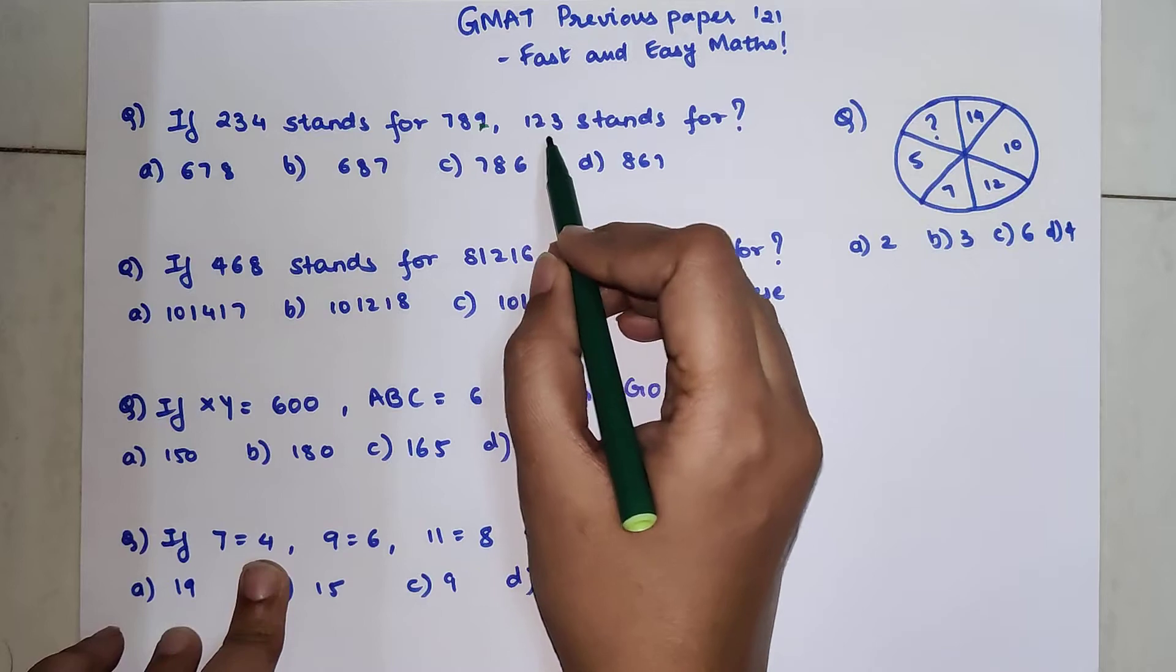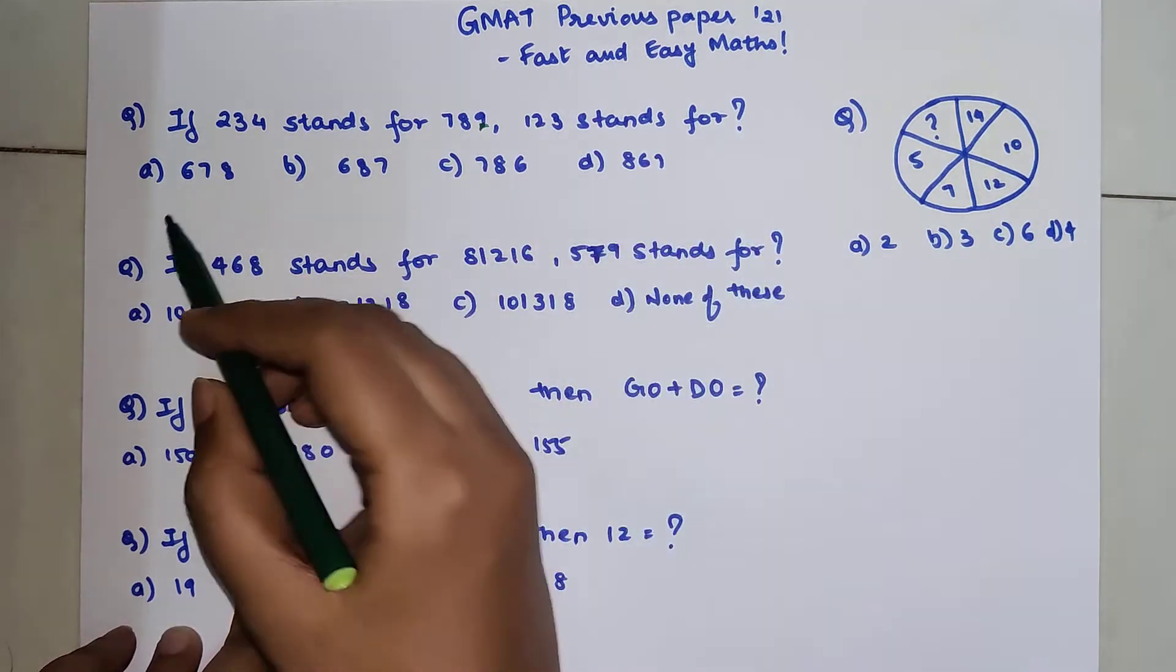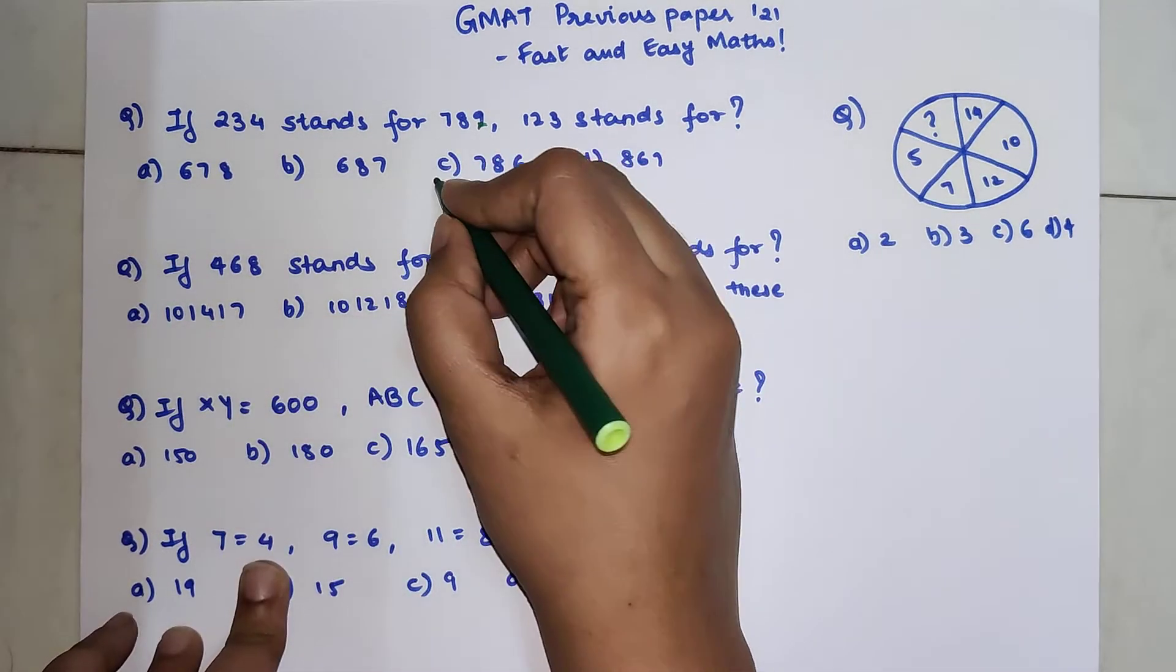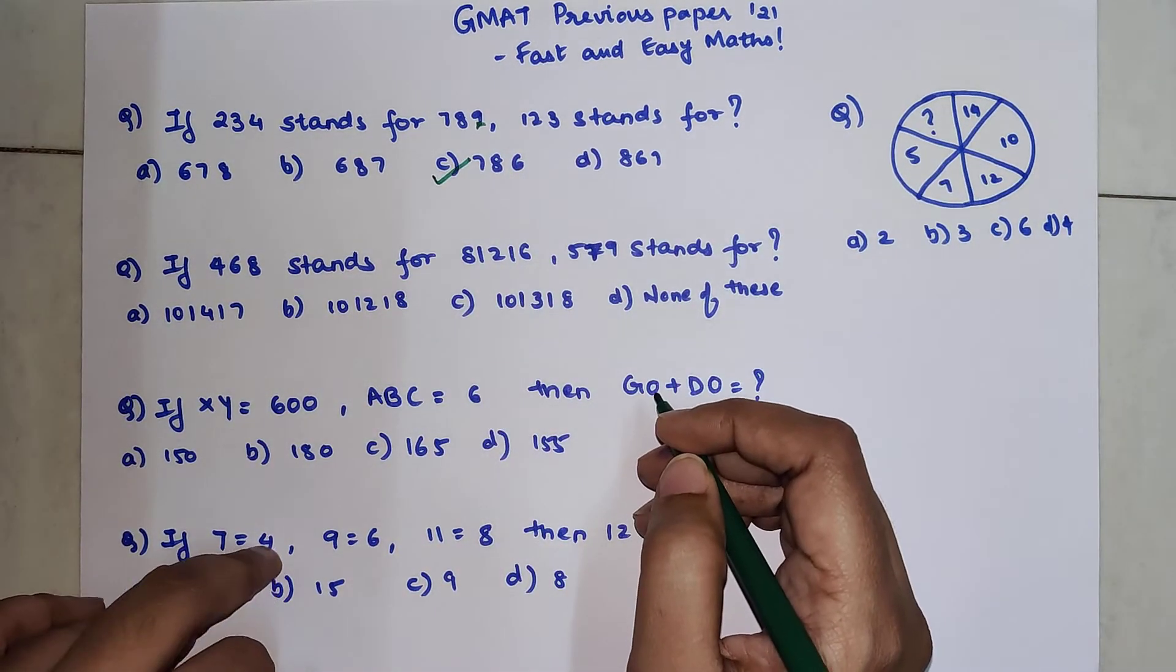So 1, 2, 3 when you add all of them you get what? 6 and let's see which answer has the last digit at 6. There is only one option so we are going to mark that option as your answer.